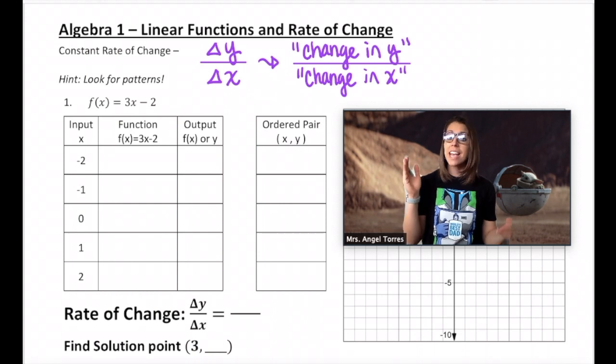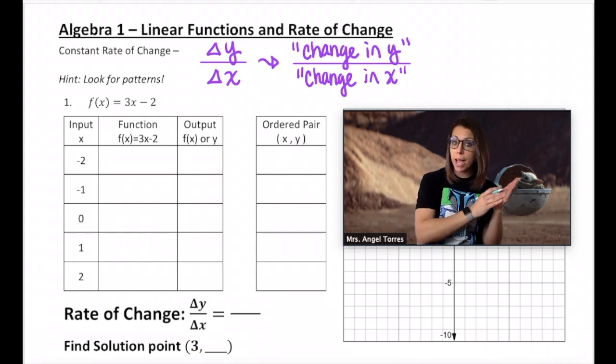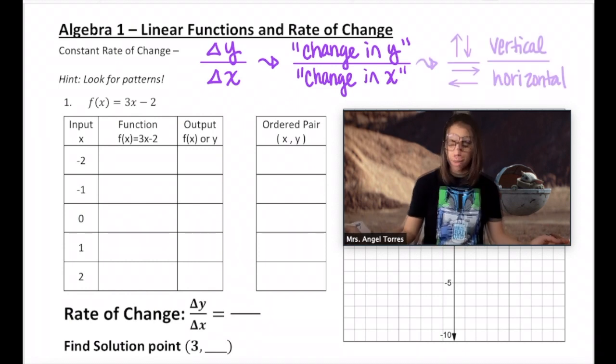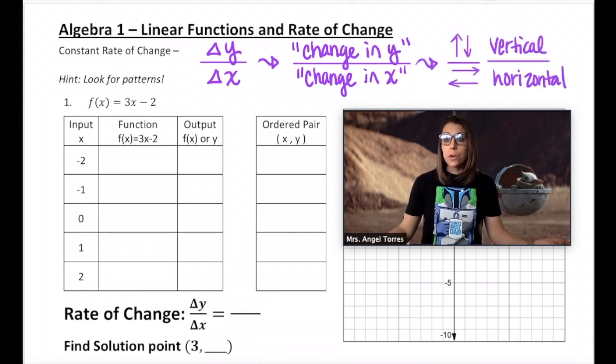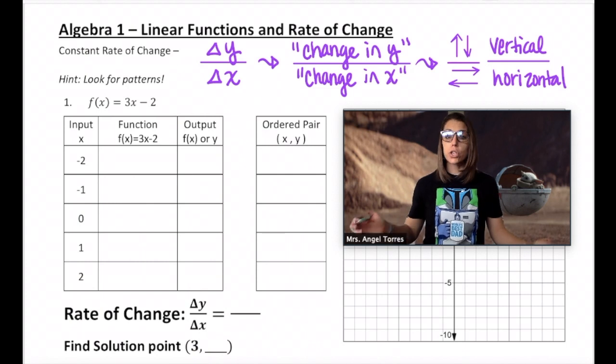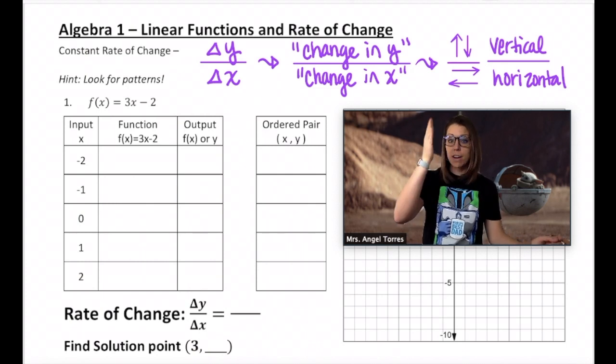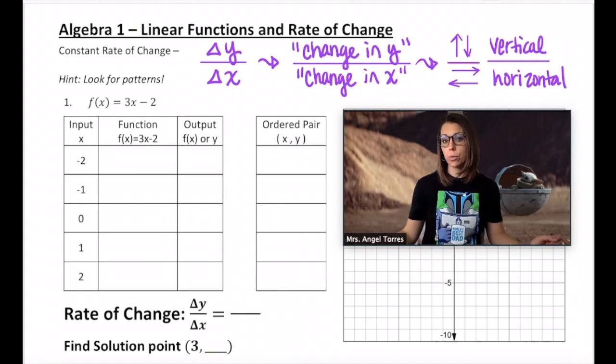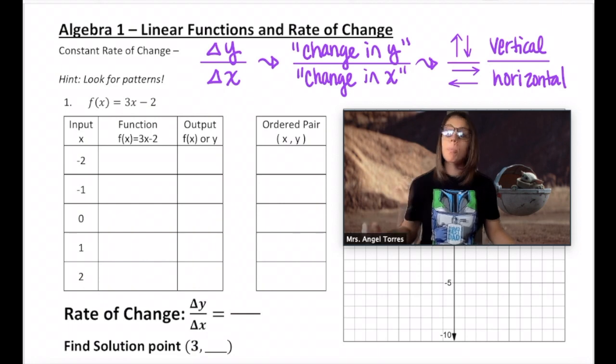Delta is the Greek letter that represents change. So really, our change in y over our change in x. Well, what does change mean? Change means how you get from one point to another. So if I were to start at 2 and end at 5, my change was plus 3. Or if I start at 10 and end at 7, that's a change of minus 3.